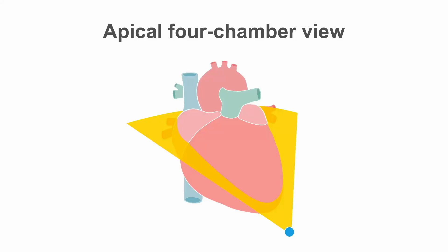This is where the apical four chamber view cuts through the heart. The probe is now down here, scanning from the apex. The first structure it's going to encounter will be the apex of the heart. In this view, the imaging sector passes through all four cardiac chambers, with the atria furthest away from the probe.